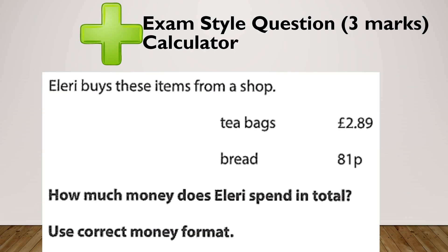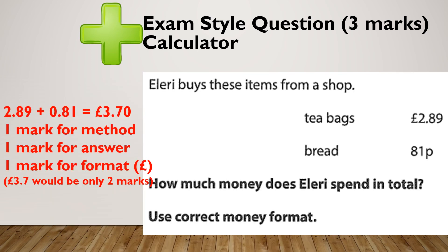Let's see what it looks like in an exam — here's a three-mark question from a calculator paper. Ellery buys tea bags and some bread. How much money does Ellery spend in total? Use correct money format. Hopefully you got £3.70: £2.89 plus £0.81. One mark for the method — knowing it was an addition — one mark for the answer, and one mark for the format. Because we were doing it on a calculator, it would show 3.7, but don't forget it's money — I need two numbers after the decimal point, so that becomes £3.70.